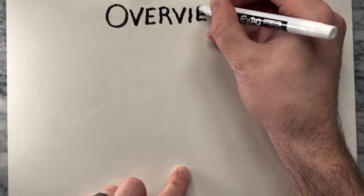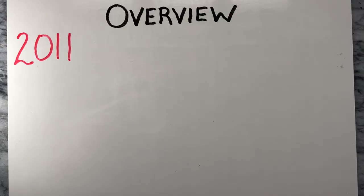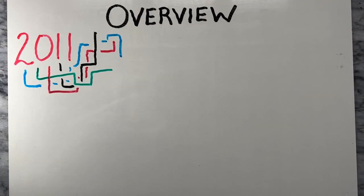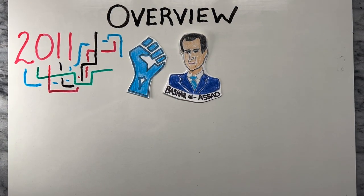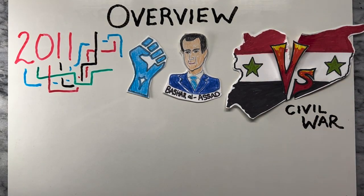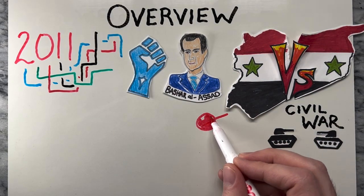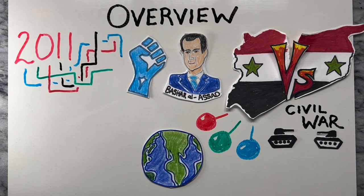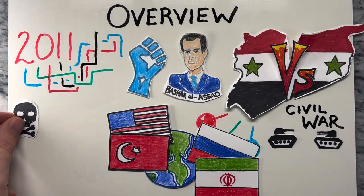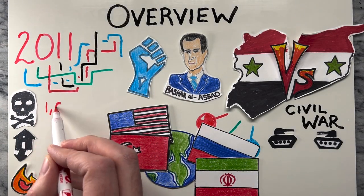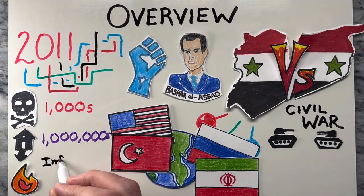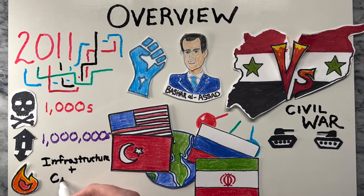The Syrian Civil War is a complex and ongoing conflict that began in 2011 as a popular uprising against the authoritarian government of President Bashar al-Assad. The conflict quickly escalated into a full-blown civil war involving multiple factions and international actors. The war has resulted in the deaths of hundreds of thousands of people, displacement of millions, and significant destruction of infrastructure and cities.